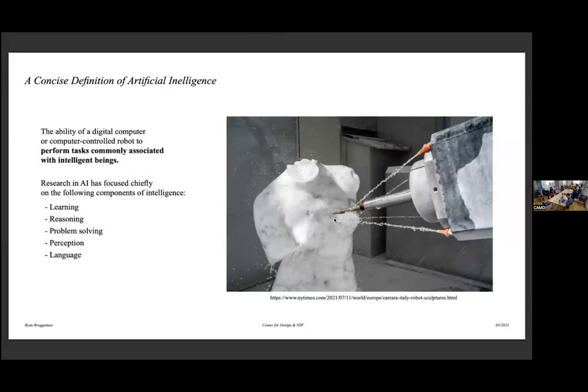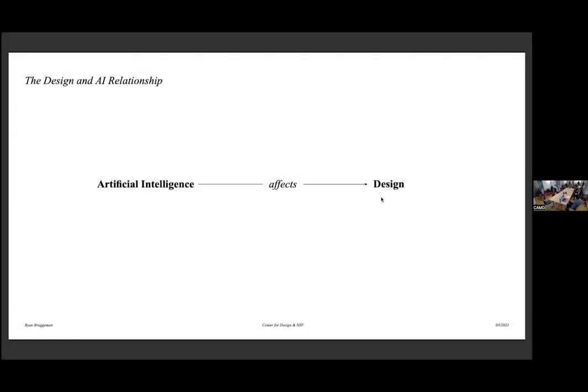So just a quick overview of what is generally, this is Britannica, what they say in AI, and it's chiefly looking into the components of learning, reasoning, problem solving, perception, or language. We're thinking about this because I've used the recent paper a posteriori, so after the fact it's existing, how is it affecting us now that it exists?